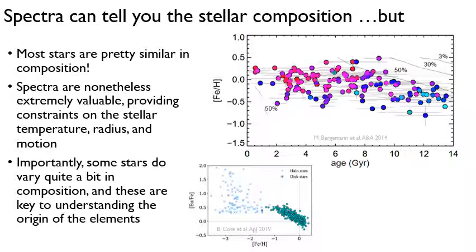I do want to mention that all stars are not exactly the same composition. Some have extremely different elemental abundances. For instance, if you look at the europium content versus the iron content, stars in the disk of our Milky Way are all very similar, but you see some halo stars that have very enriched europium. Composition differences like these are very important in terms of understanding the history of element formation in our universe.